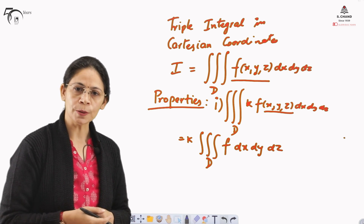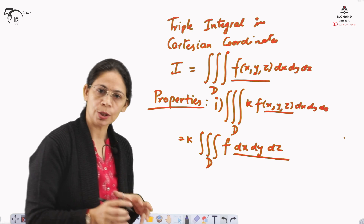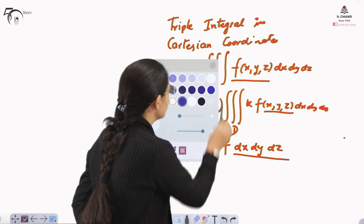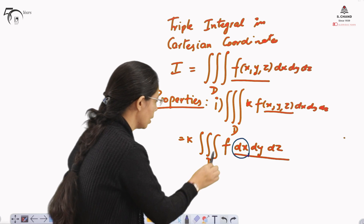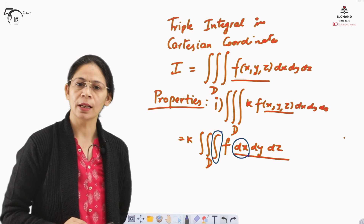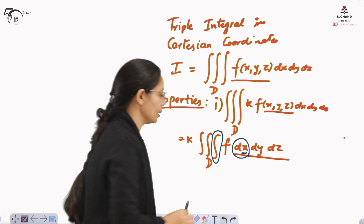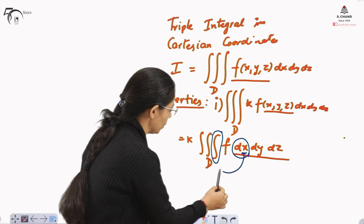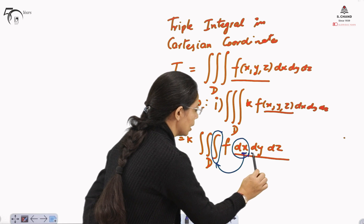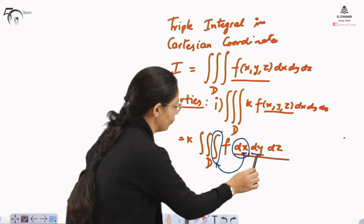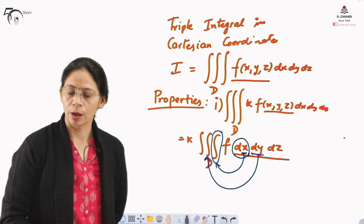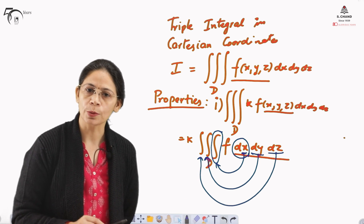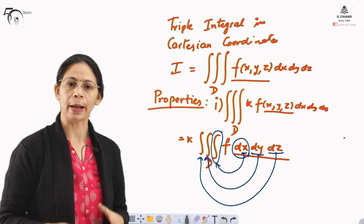In our previous videos on double integral, we learned that the order in which these variables are written is very important. If we have written dx first, that means we need to integrate with respect to x first. So this innermost integration will represent the limits for the variable integrated first. If we are integrating with respect to x first, the limits of x are shown on the innermost integration sign. The second integration will be taken with respect to y, showing the limits for y. The outermost integration sign will represent the limits for z.